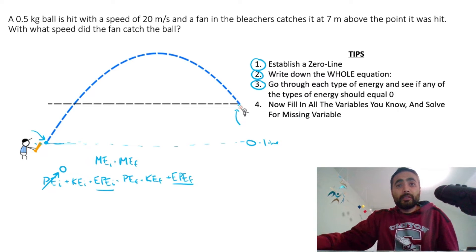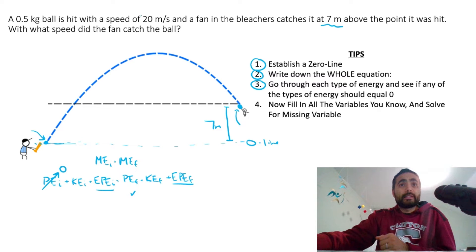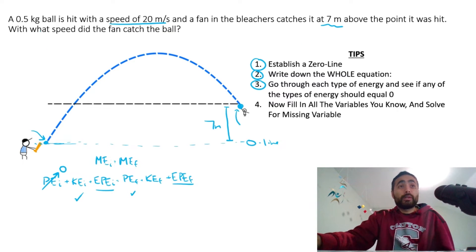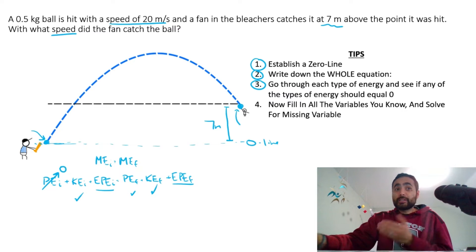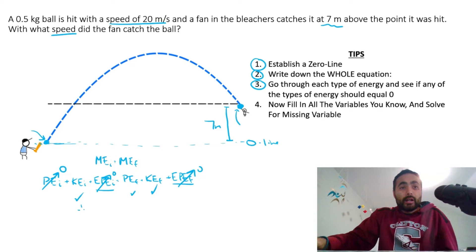At the very end, is the ball at the zero line? No — it's seven meters above the point it was hit, so there is potential energy at the end. Kinetic energy at the very beginning: is it moving? Yes, with a speed of 20 meters per second, so we have kinetic energy at the beginning. At the very end, is it moving? Yes — that's what we're looking for, the speed the fan catches the ball. Elastic potential energy: at the beginning and end, is there something elastic stretched or compressed? No, so both are zero. So the kinetic energy at the beginning equals potential energy at the end plus kinetic energy at the end.